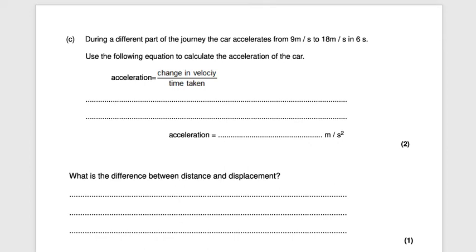Hi there and welcome to our video on some exam questions related to forces. Our first exam question states: during a different part of the journey, the car accelerates from 9 meters per second to 18 meters per second in 6 seconds. Use the following equations to calculate the acceleration of the car. To calculate acceleration you need to do the change in velocity divided by the time taken.